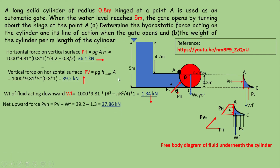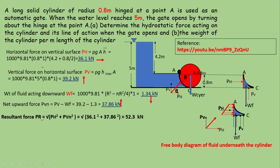The net vertical force: pvn = pV − Wf = 37.86 kN. The horizontal component of the resultant hydrostatic force is 36.1 kN and the vertical component is 37.86 kN. The resultant hydrostatic force equals √(pH² + pvn²) = 52.3 kN. So the hydrostatic force acting on the cylinder equals 52.3 kN.